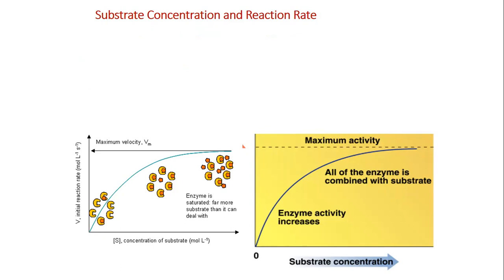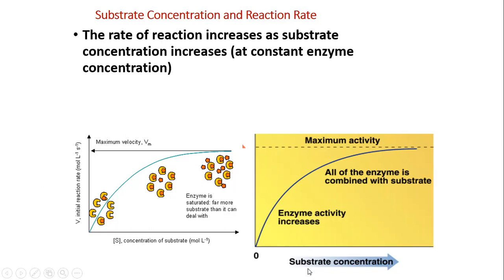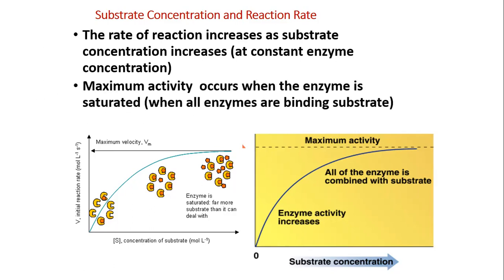And look at the amount of substrate and the time. This is the substrate concentration and reaction rate. Look at the amount of substrate. As it increases, the enzyme activity increases till a maximum. Then it reaches, it is still constant. This is the substrate concentration. The rate of reaction increases as substrate concentration increases at constant enzyme concentration. Maximum activity occurs when the enzyme is saturated when all enzymes are binding substrate.